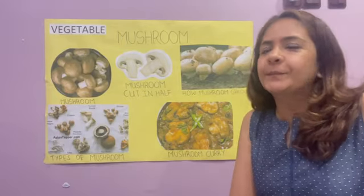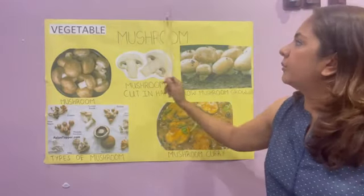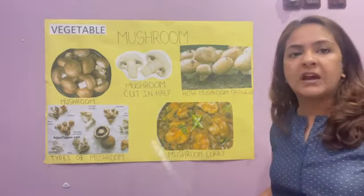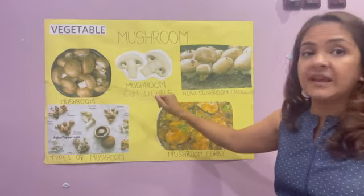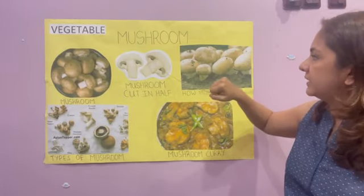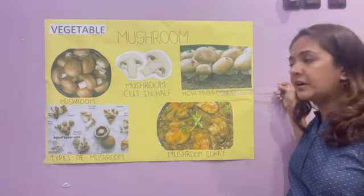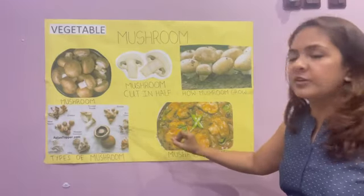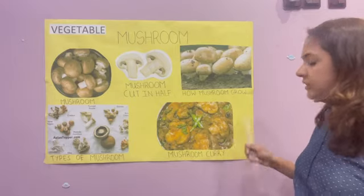Good morning kids, how are you today? Today we'll be learning about a vegetable called mushroom. First, let's see what we have in the chart here. We have the mushroom as a whole, and when we cut it in half it looks like this. This is how they grow — they grow above the ground — and here we see many different types of mushroom.